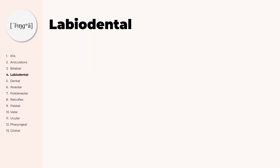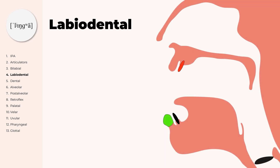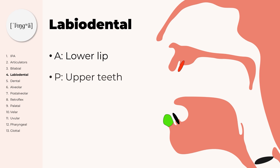Next we have the labiodental consonants. On this image we can see in green the active articulator, the lower lip, and in red the passive articulator, the upper teeth. When they touch, we get for example the sounds F and V.